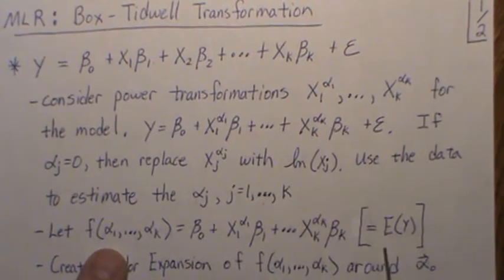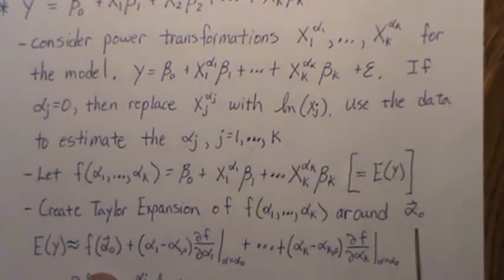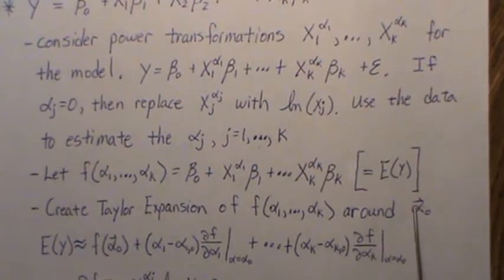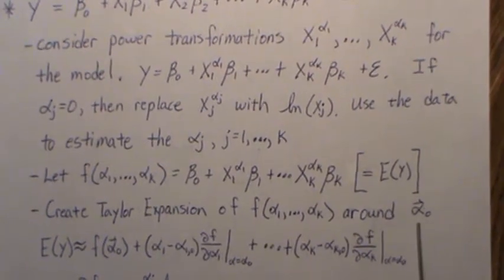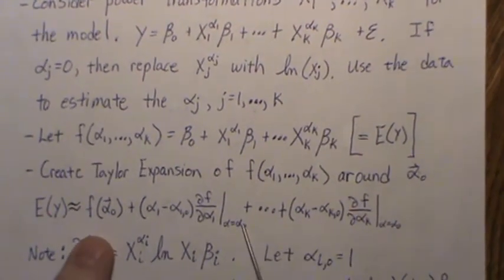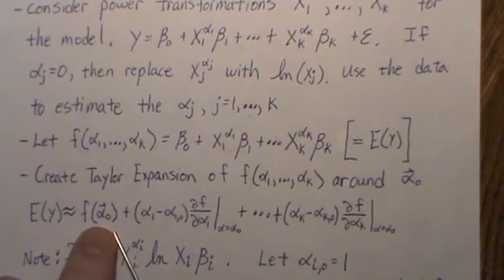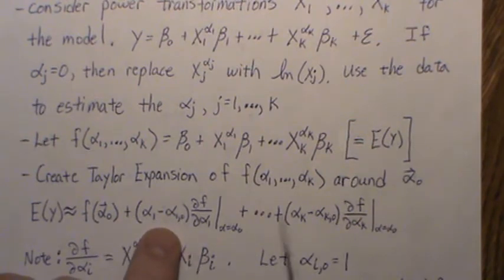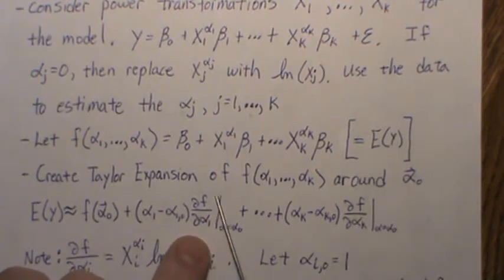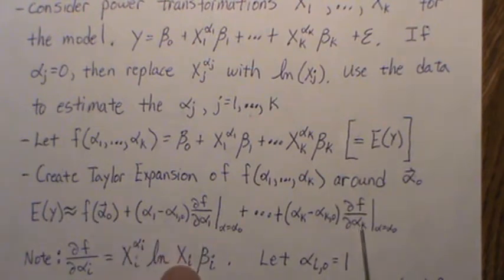Now we want to create a Taylor expansion of our function around a point alpha_not. So this is a vector that contains alpha_1, alpha_2, alpha_3 up to alpha_k. That's this _not. And a first order Taylor expansion is this: our function, which is the expected value of y, is equal to the functional value evaluated at this point, plus alpha_1 minus the value of that first component - the first partial derivative of alpha_1 evaluated at alpha_naught. We do that for all k parameters, so up to alpha_k.